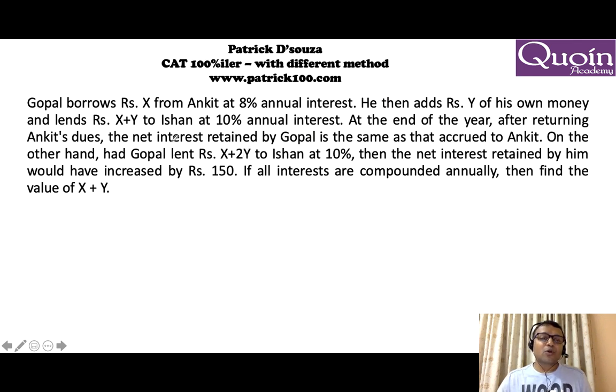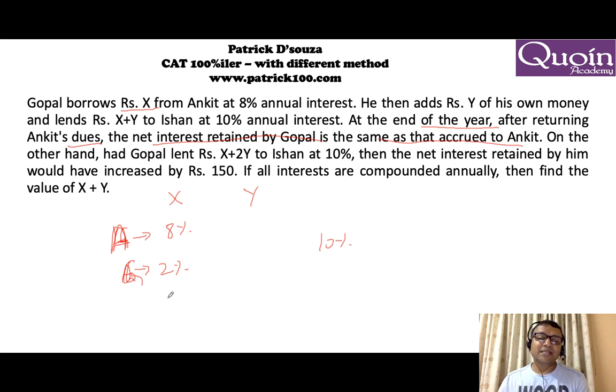If we look at next sum, Gopal borrows X from Ankit at Rs. 8. So he borrows X at 8%. He adds Y and then both X plus Y gives at 10%. End of the year after returning Ankit's use, the net interest retained by Gopal is same as accrued by Ankit. So if you look at, he gave this 8% also at 10%. So from this Gopal earns 8%, Ankit earns 2% here. Gopal earns 2%, Ankit earns 8%. Because he gave it at 10% and he gains 2%. So balance left is 6% is what Ankit earns net. And apart from that Gopal earns 10% on Y.